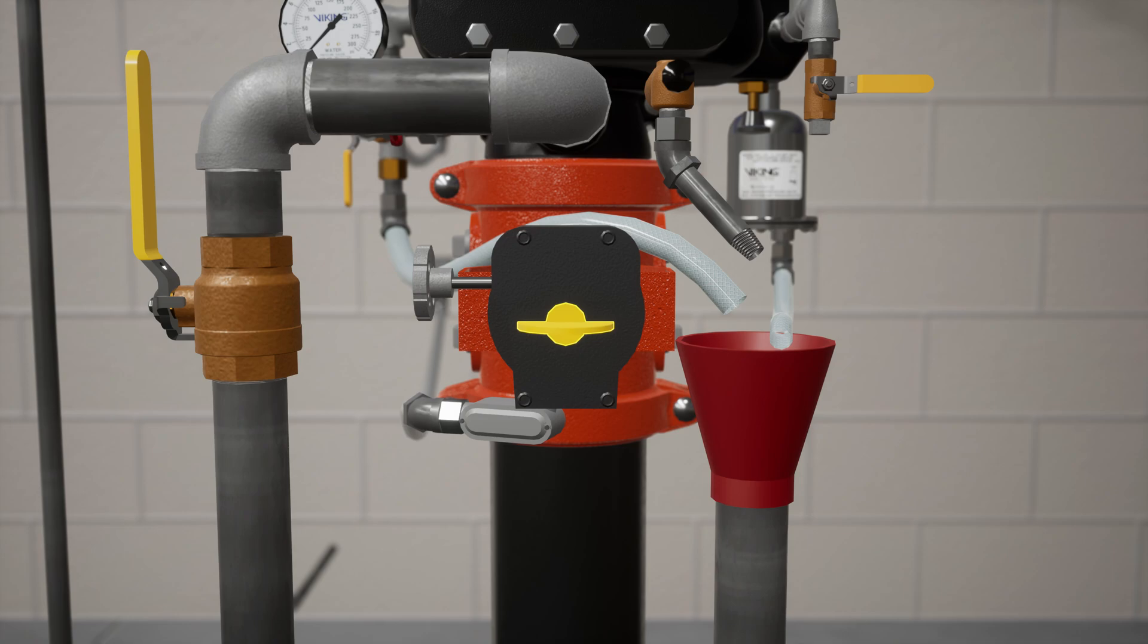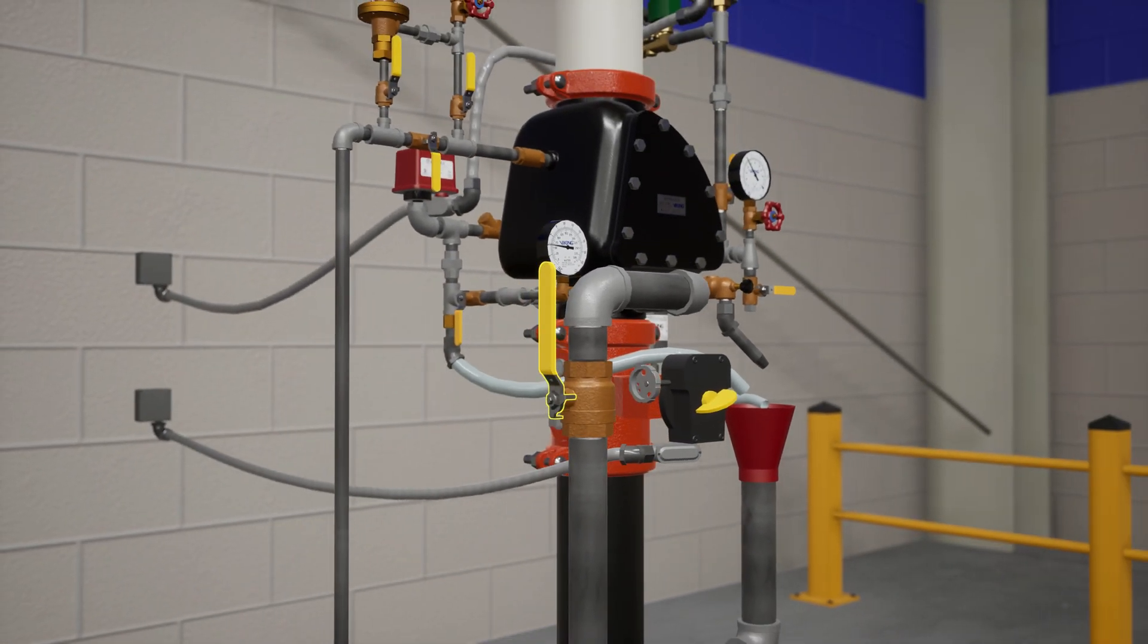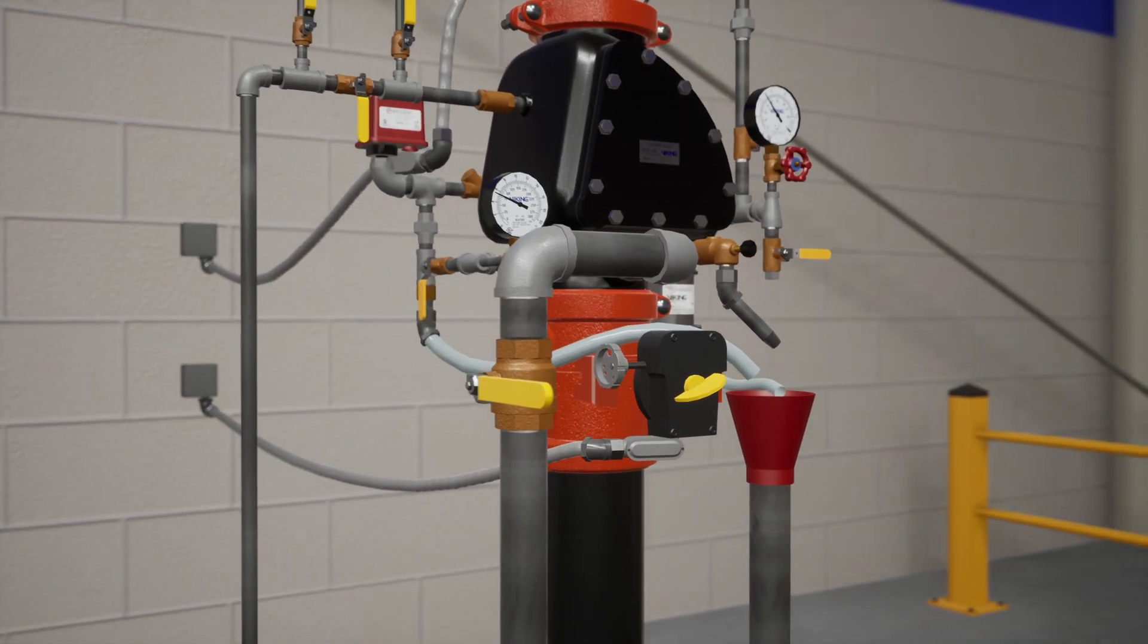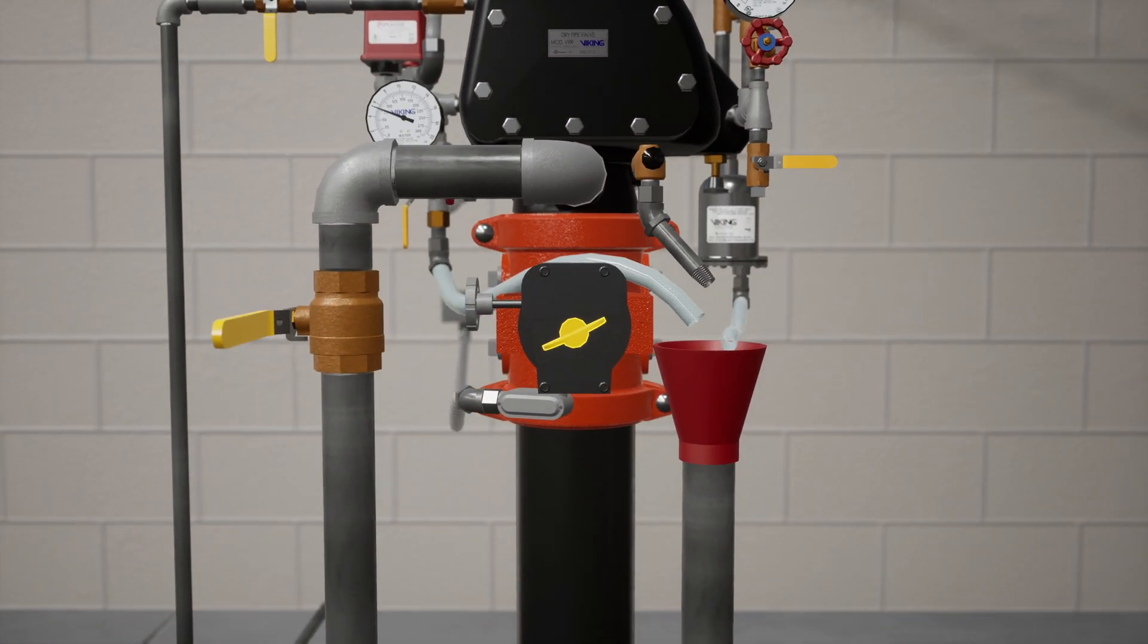Partially open the water supply valve and allow water to enter the inlet of the valve. Now, close the main drain. Water supply pressure will show on the water supply pressure gauge. Fully open the water supply control valve.